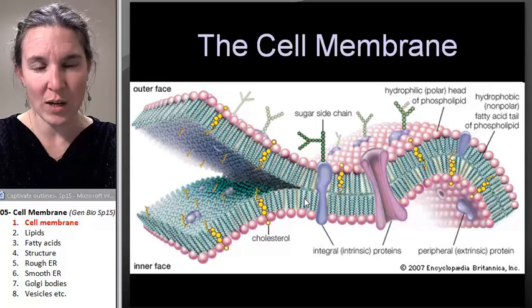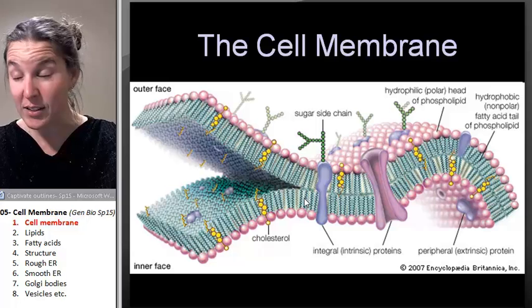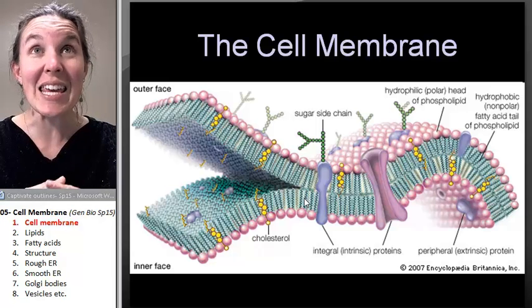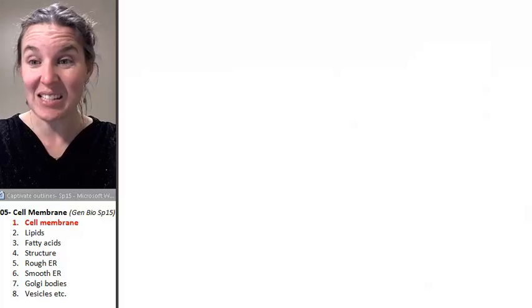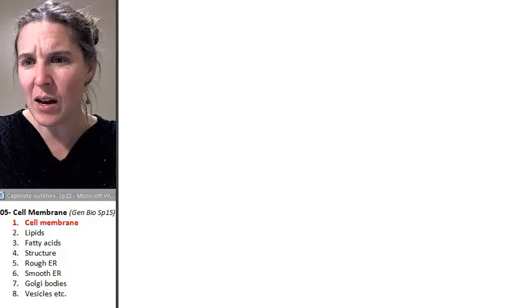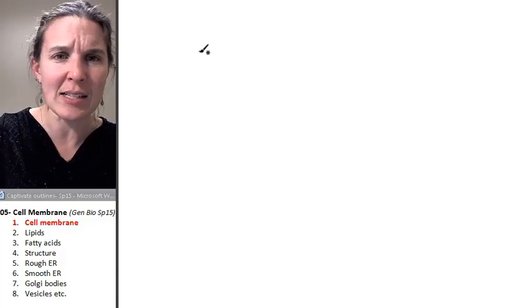The other thing that you need to know is that all cells have a cell membrane. Even cells that have a cell wall still have a cell membrane. I'm going to draw you a picture. Tell me what kind of a cell has a cell wall.